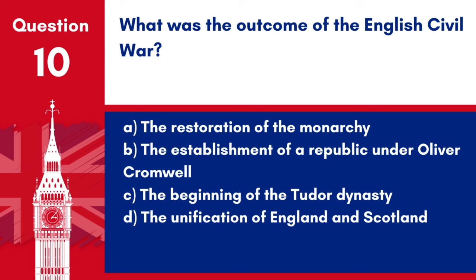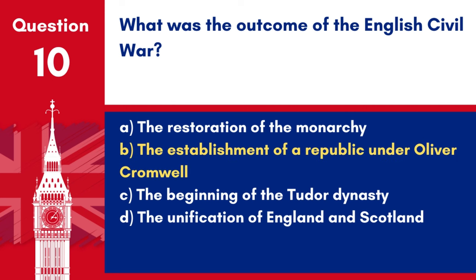Question 10. What was the outcome of the English Civil War? A. The restoration of the monarchy. B. The establishment of a republic under Oliver Cromwell. C. The beginning of the Tudor dynasty. D. The unification of England and Scotland. Answer: B. The establishment of a republic under Oliver Cromwell. The outcome of the English Civil War was the establishment of a republic under Oliver Cromwell.